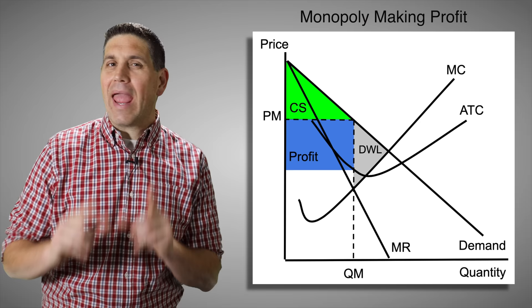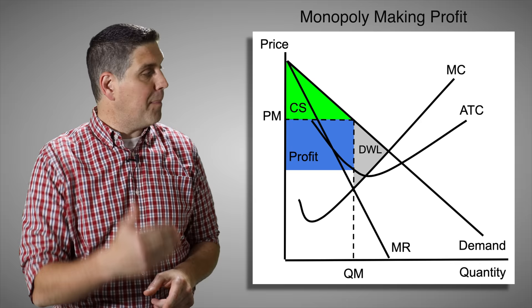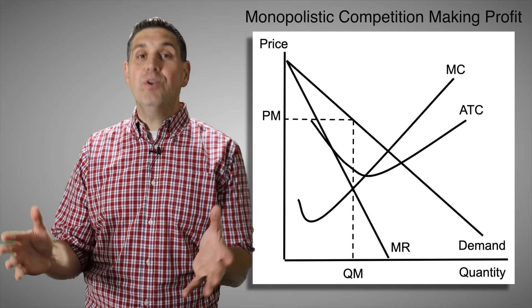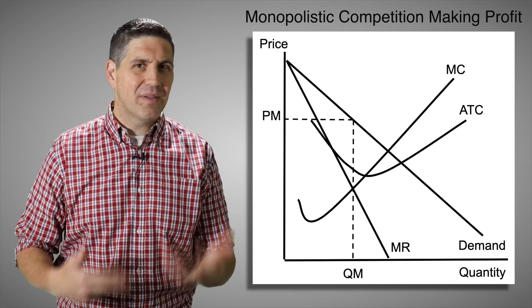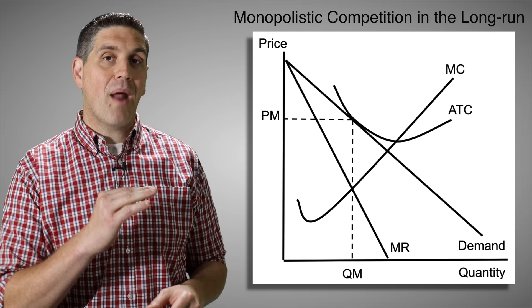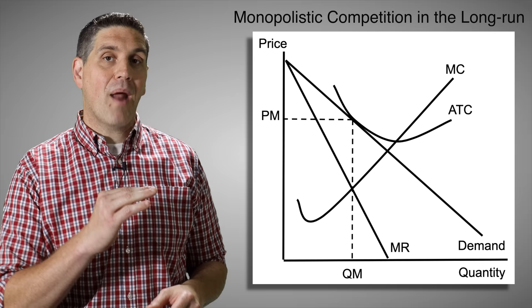You should know the graph for a monopoly making a profit and also for a monopoly making a loss. You should also be able to spot consumer surplus and deadweight loss for a monopoly. A monopoly is not allocatively efficient — it holds back production to maximize profit. The monopoly graph is the same for monopolistic competition in the short run. And for monopolistic competition in the long run, the ATC is tangent to the demand curve, showing no economic profit.